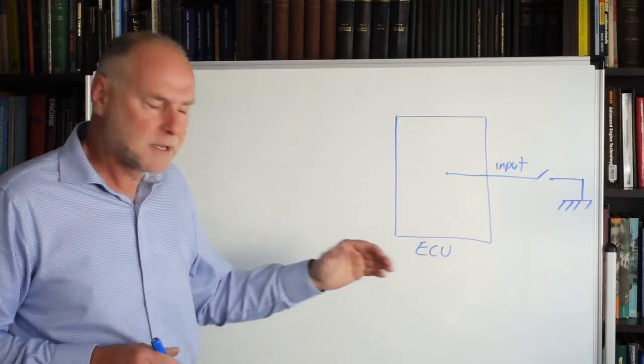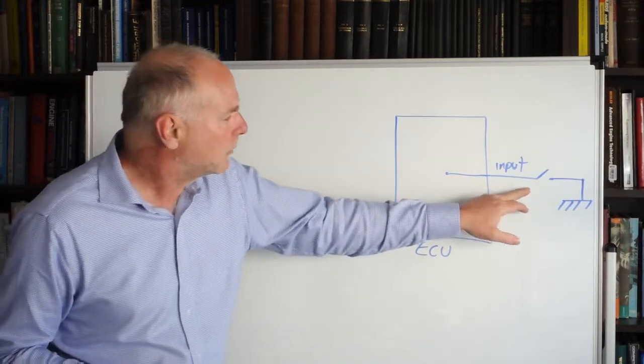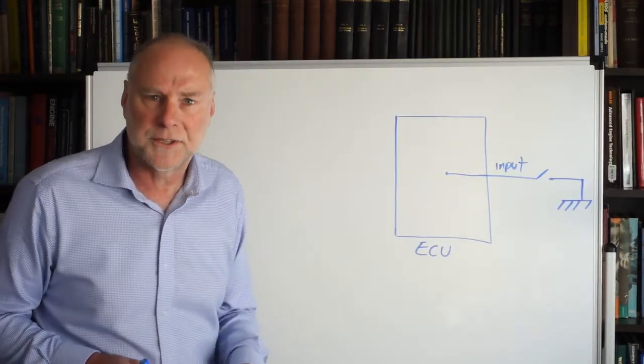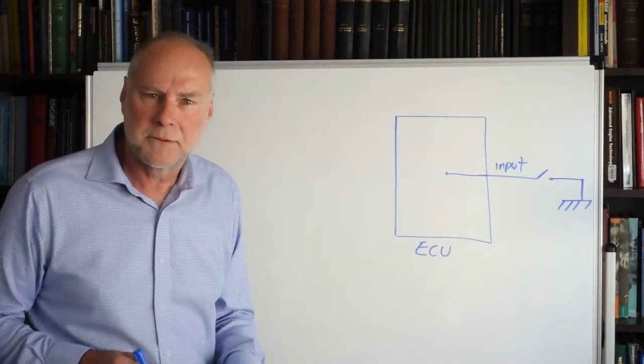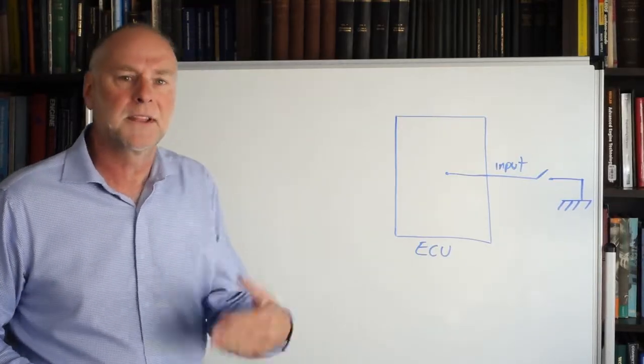So I've got a diagram here that shows an ECU, an electronic control unit, and it's got an input, and that input is connected via a switch to ground, and that could be a driver selection switch to change maps in the engine management system, or something of that sort. The driver flicks the switch when they want to tell the ECU something.